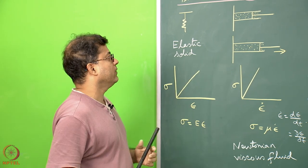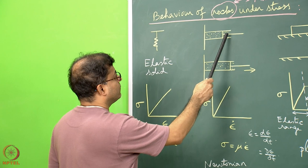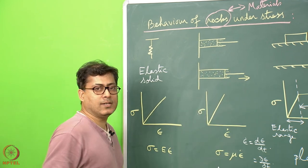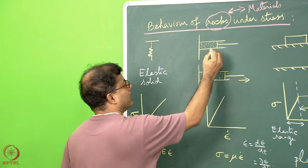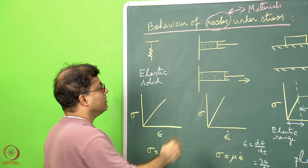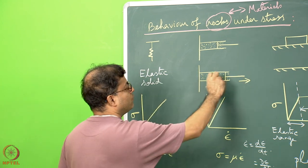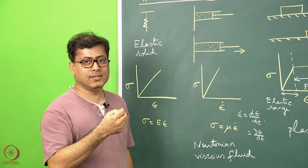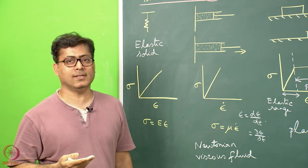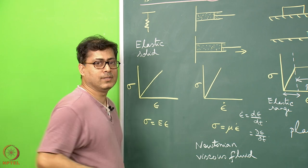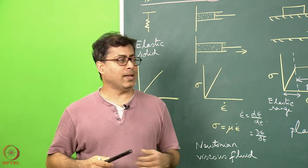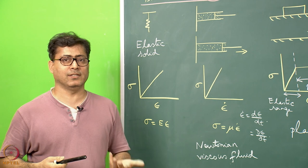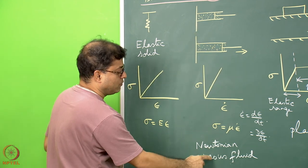The mechanical analog is a dashpot: a piston inside a container full of viscous fluid, where the piston is perforated — meaning there are perforations in the piston. If I pull the piston, it moves in that direction. When the stress is released, common sense tells us the piston will not go back. That is the behavior of fluids — a fluid that has flowed will not come back to its initial position when the driving force is stopped. Such a model represents a Newtonian viscous fluid.